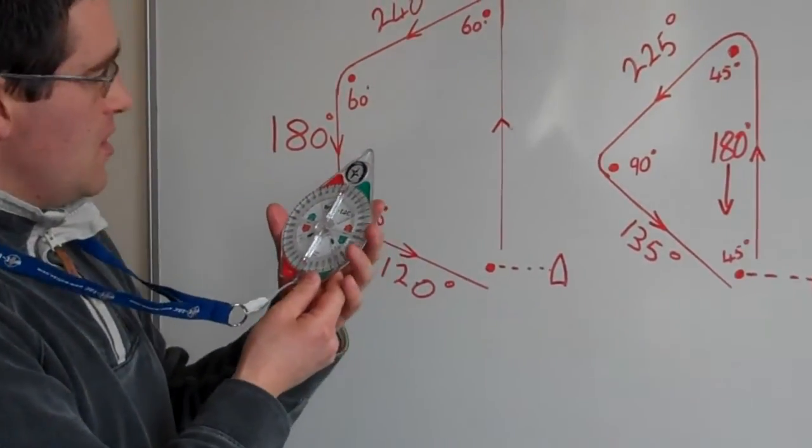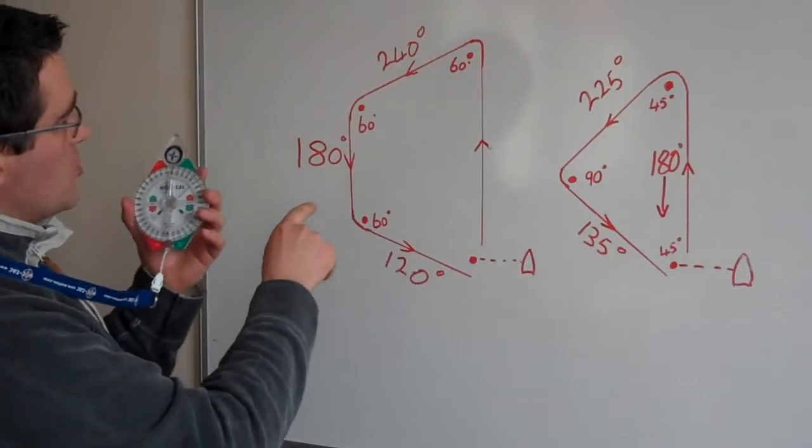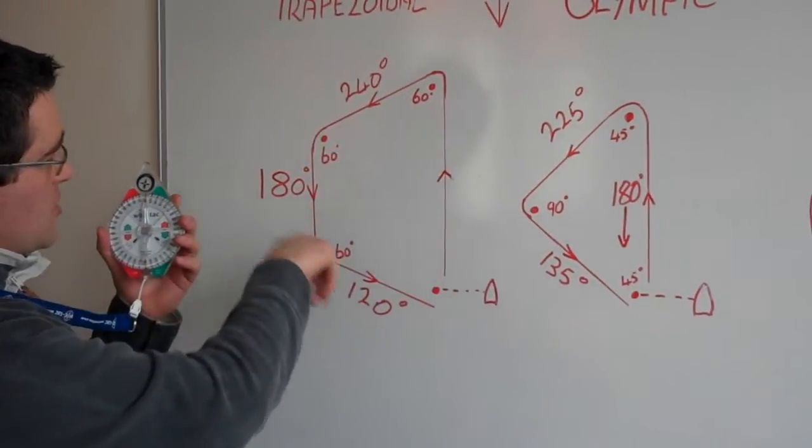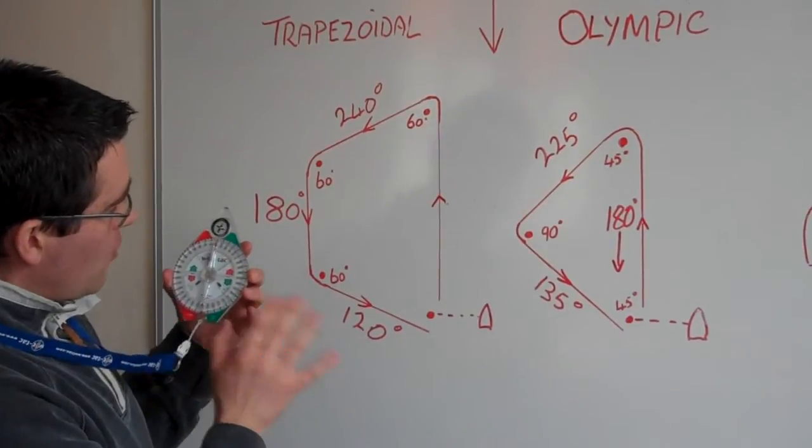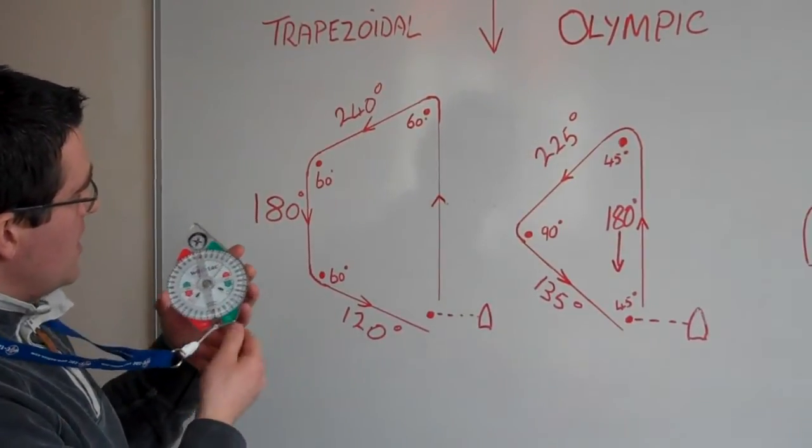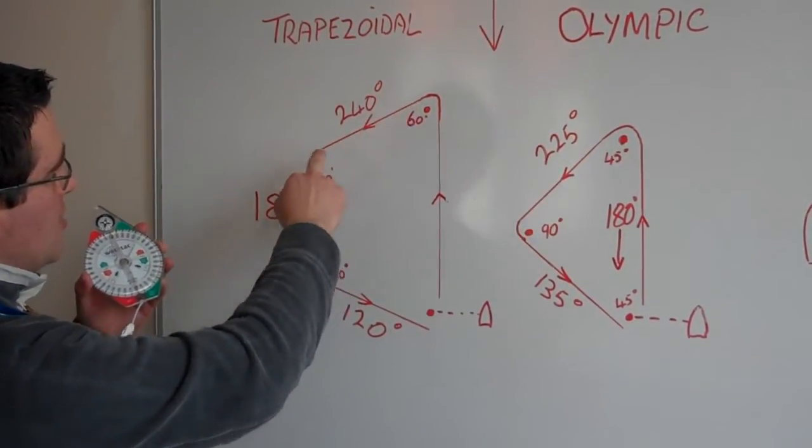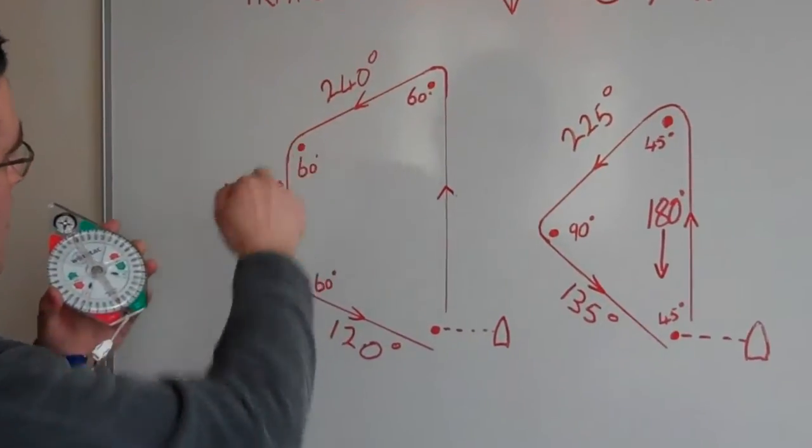Let's start with the trapezoidal course. We know that trapezoid courses have the marks laid out at 60 degrees to one another. So, before the start, what we need to do is we know that this leg will be on starboard from mark 1 to mark 2.